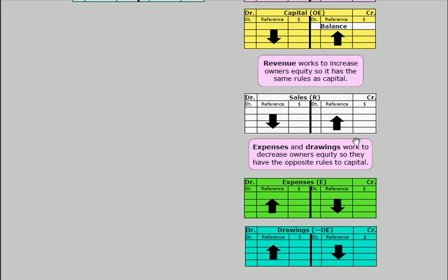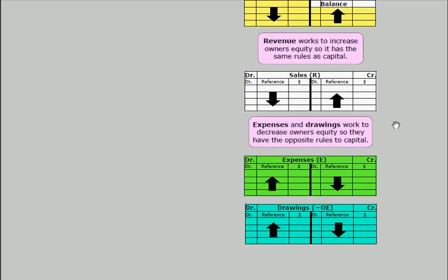What about expenses and drawings? We should know that expenses and drawings work to decrease owner's equity, so they will have the opposite rules to capital. To show an increase in expenses, it's a debit entry. To show an increase in drawings, it's also a debit entry — the reverse of the rules for capital.